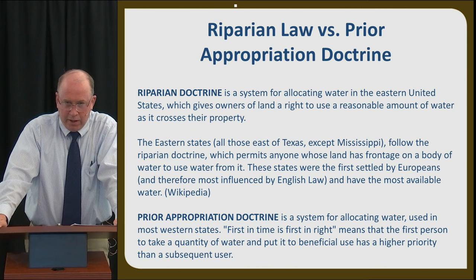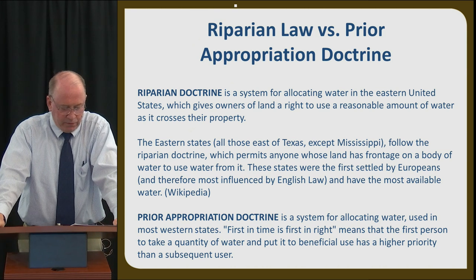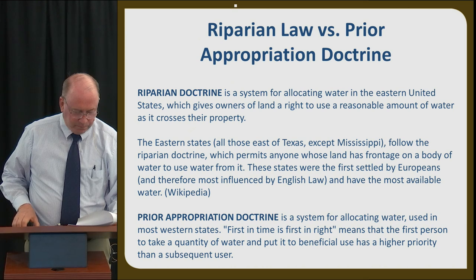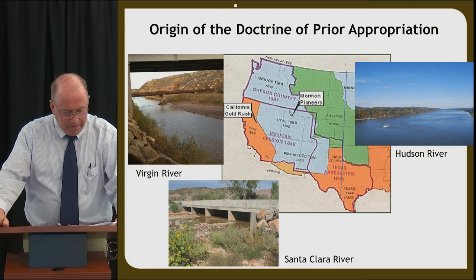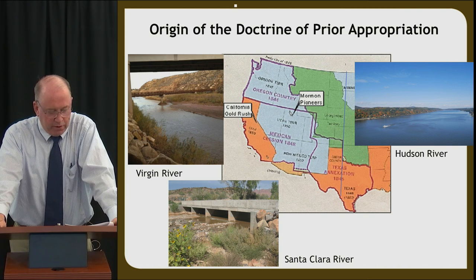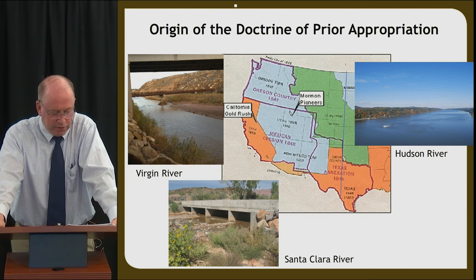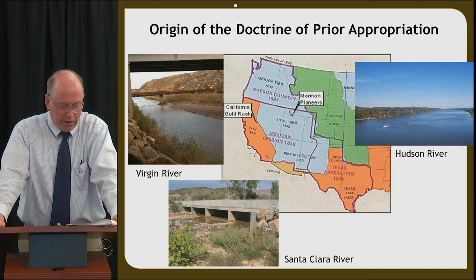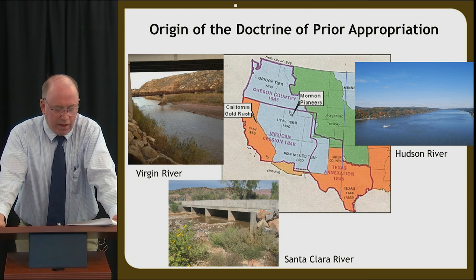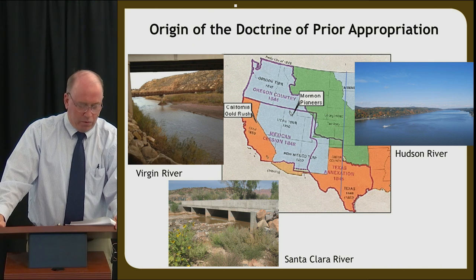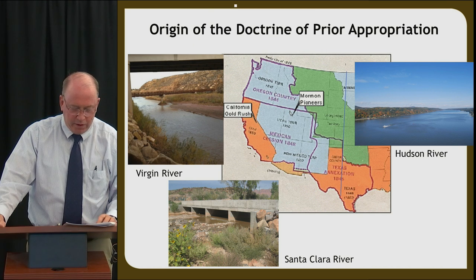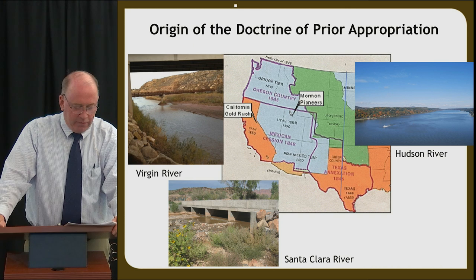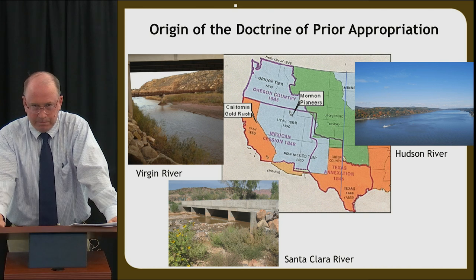Prior appropriation doctrine is a system for allocating water used in most western states. First in time is first in right — the first person to take a quantity of water and put it to beneficial use has a higher priority than a subsequent user. The development of laws governing water rights in the United States was markedly different in the east. The most important reason was the difference in climate and geography. In the east, precipitation is relatively abundant and water courses are numerous. In most of the west, the opposite is true — relatively slight precipitation means fewer water courses, which increases the necessity to divert water to areas of use.